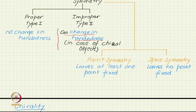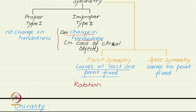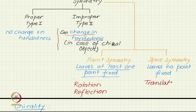Point symmetry leaves at least one point fixed. Rotation leaves the axis unchanged, so the points on the axis are invariant. For reflection, the points on the reflection plane are invariant — these points do not change after reflection. But if you talk of a space symmetry, such as translation, then all points move. For translation there is no fixed point, so that is a space symmetry. Rotation is a point symmetry, reflection is a point symmetry, but translation is a space symmetry.